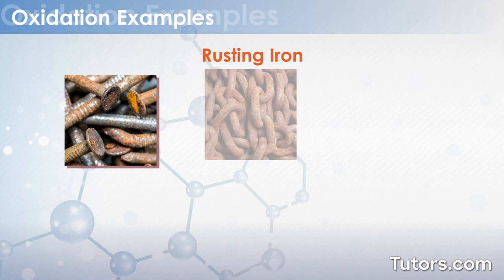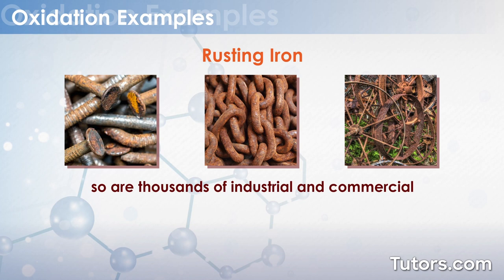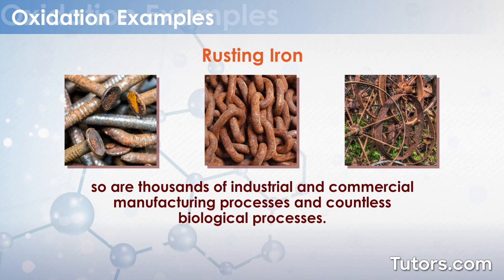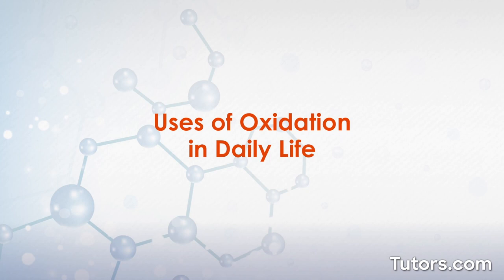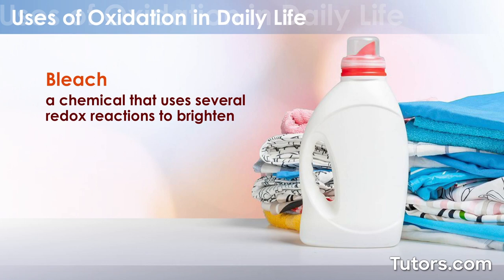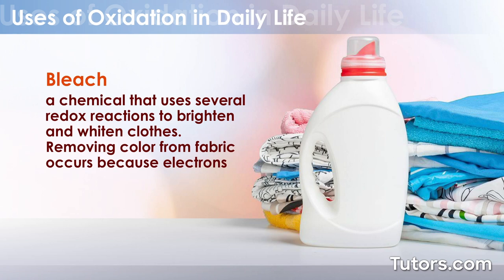Oxidation examples. Rusting iron is a clear example of an oxidation reaction, but so are thousands of industrial and commercial manufacturing processes and countless biological processes. Most of these are redox reactions in which oxidation and reduction are unbreakably linked. Uses of oxidation in daily life: bleach is a chemical that uses several redox reactions to brighten and whiten clothes. Removing color from fabric occurs because electrons change energy levels and the process forms ions.